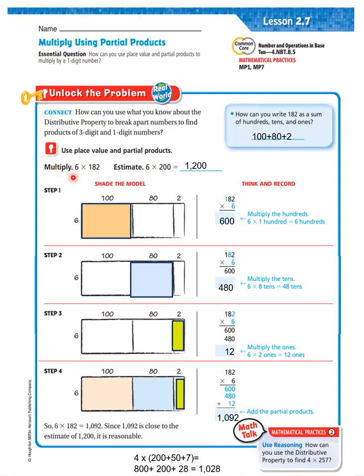If we multiply 6 times 182, we can estimate that as 6 times 200 equaling 1,200. So, let's look at step one. It says shade the model. 6 times 100. Look over here. It says 6 times 100. That is not the number 1. That is the number 100.